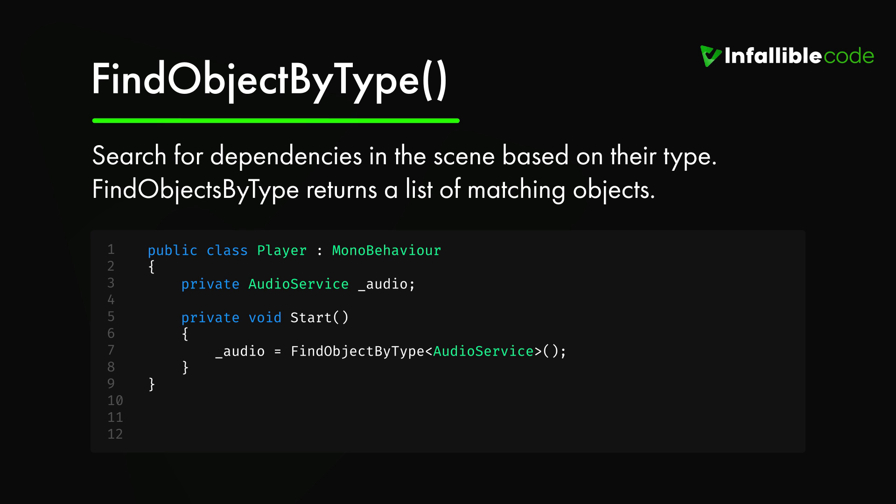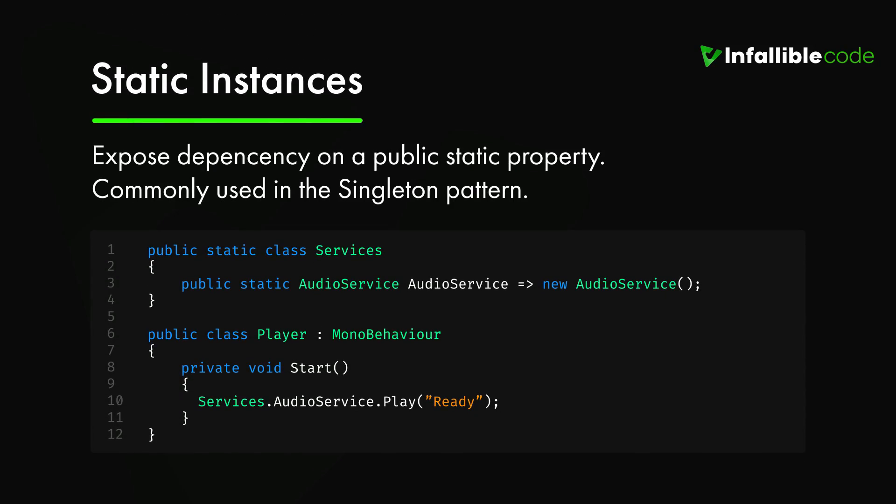A good use case for FindObjectByType is to locate something like a manager script right at startup — something you know will be active in your scene when it's called. Static instances are scripts exposed on a public static property. If you've ever used the singleton pattern you should already know what these are. They typically hold a reference to a script that acts as a controller, manager, or service for your game code, and as singletons they generally expose a single instance used multiple times in your code. Some developers despise singletons while others swear by them — I tend to use them sparingly but find them extremely useful in certain situations.